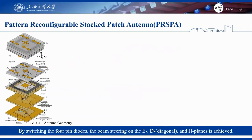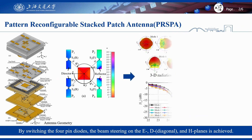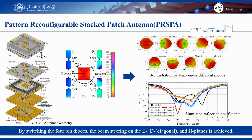First, let us focus on the antenna design. For each pattern-reconfigurable stacked patch antenna, four patches are on the top and the driven patch is placed on the lower layer. The top patches are located along the diagonals and integrated with four diodes. By switching the operating states of the diodes in the top patches, each top patch can work as a director or reflector, and the beam direction can be steered on multiple meridian planes.